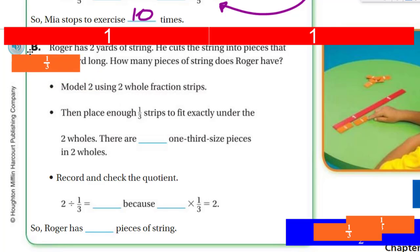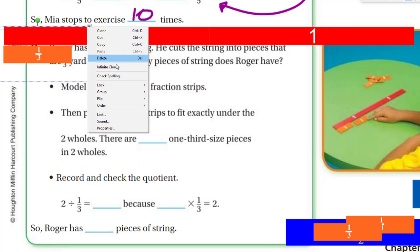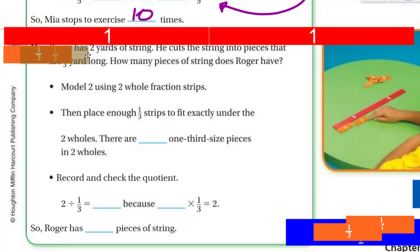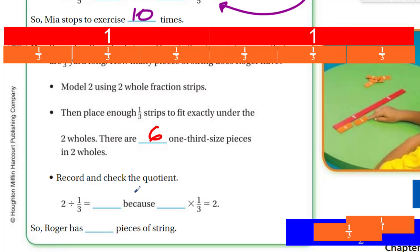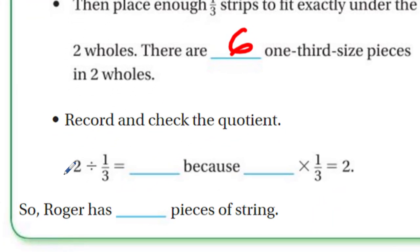Alright. Well, let's go ahead and start doing that. We'll put 1 here. And I'll start making a bunch of these. In fact, let me just go ahead and put that one there. And I'm going to just make him an infinite cloner. There we go. So we can drag one across. So here's another one. And here's another one. That fits exactly under. So there are 6 one-third size pieces in 2 wholes. Record and check the quotient. Well, it says 2 divided by 1-third is equal to 6, because 6 times 1-third equals 2. So Roger has 6 pieces of string.